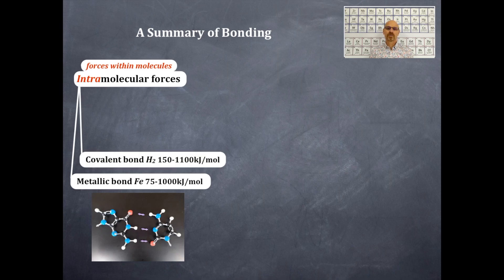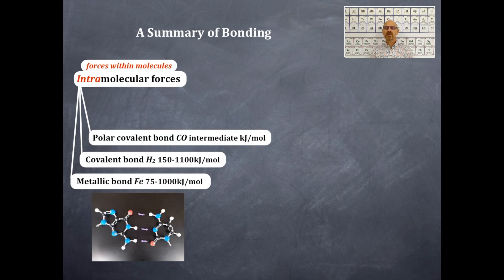Then we have a covalent bond. A perfect example of that is between a hydrogen molecule, and that is between 150 and 1100 kilojoules per mole. Then we have a polar covalent bond — an example of that is carbon monoxide — and that has an intermediate bond energy in kilojoules per mole. That varies quite a bit because there are a lot of different polar covalent bonds.